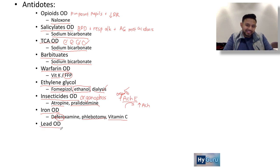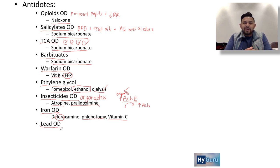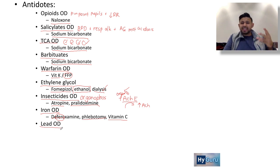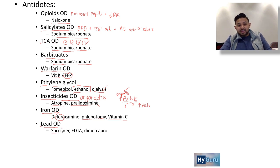Lead overdose — classically a child in an old house eating paint chips, but the presentation is nonspecific: fatigue, constipation, intellectual delay, or regression in milestones. Lead inhibits ferrochelatase — an important biochemical tie-in. Treatment: succimer (because lead poisoning sucks), EDTA (the spelling contains 'lead' conceptually), and dimercaprol.